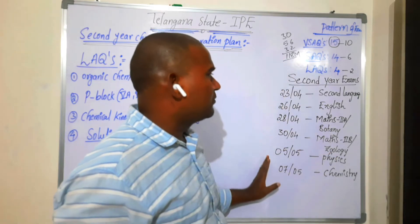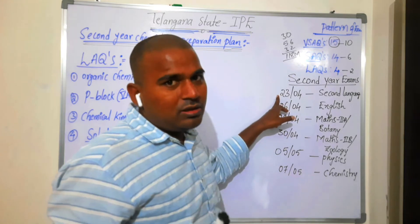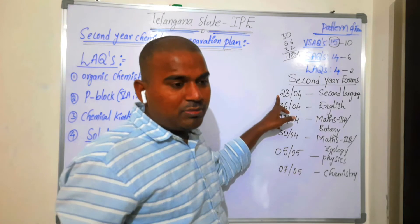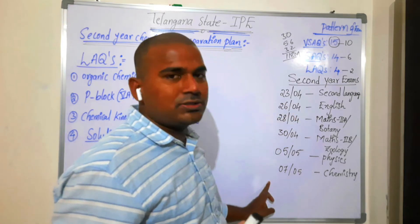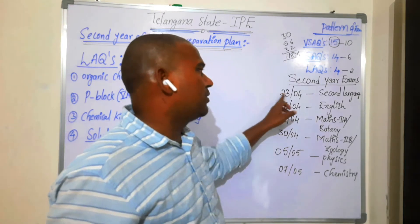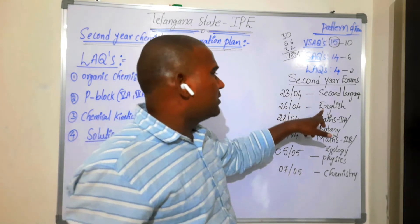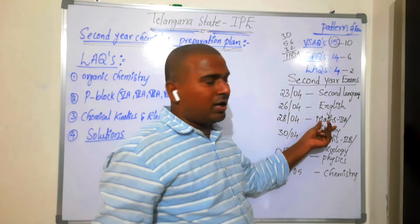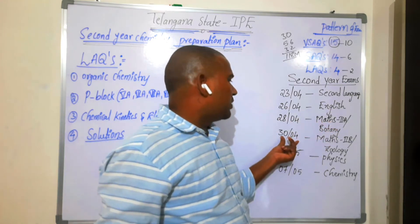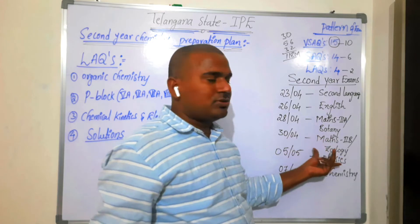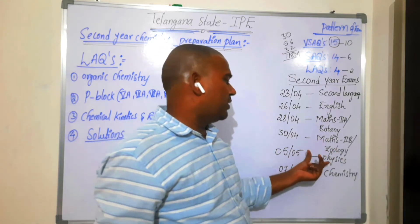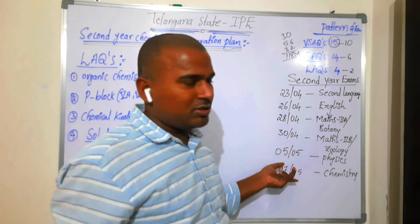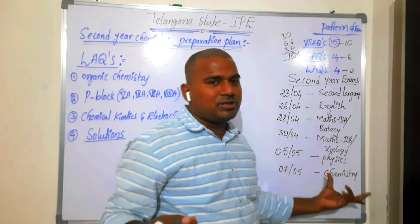2nd year exams: 1st is 23rd — the language paper. 26th of April is English. 28th of April is Maths 2A or Botany. 30th of April is Maths 2B or Geology. 5th of May is Physics. 7th of May is Chemistry exam.